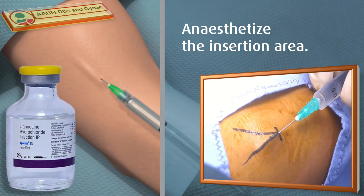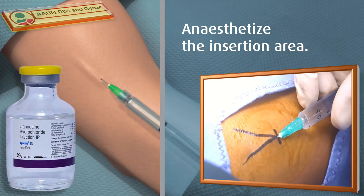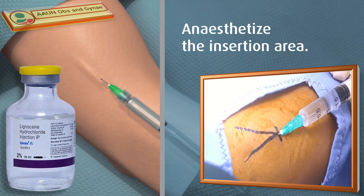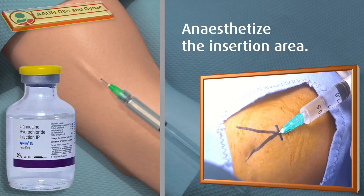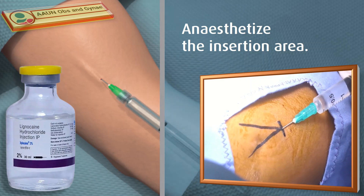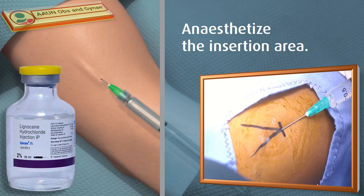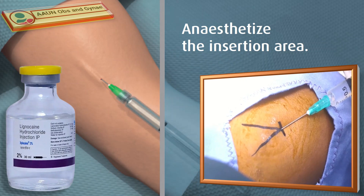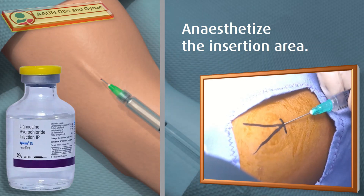Fill the syringe with 2 to 4 ml of local anesthetic. Anesthetize the insertion area by inserting the needle just under the skin, about 5 to 5.5 centimeters in the direction where you are planning to introduce the disposable trocar.